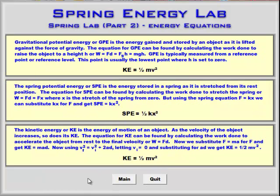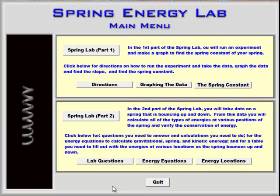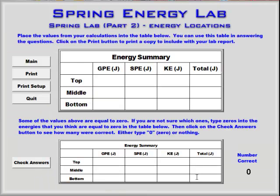Here are the equations for figuring out the kinetic energy and the spring potential energy, both at the top and the bottom. Then they will place their calculations for the gravitational potential energy at the top, middle, and bottom, and the kinetic energy at top, middle, and bottom.